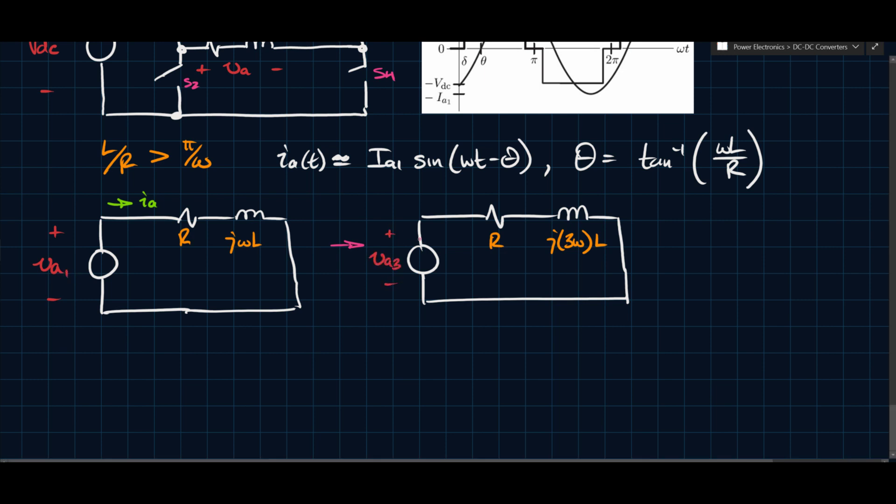And then you would also have this voltage would have to be different. So if this is VA1, this might be VA3, and then this would have to be IA3. So this is a simplified circuit, but we can use it to analyze all of the different harmonics.